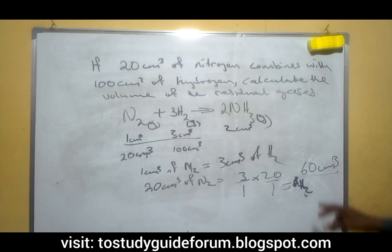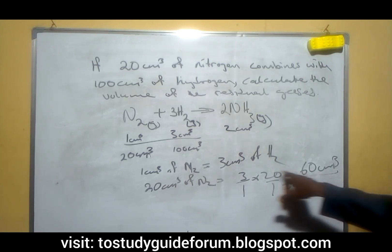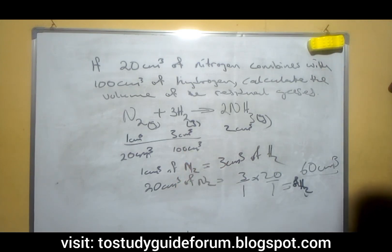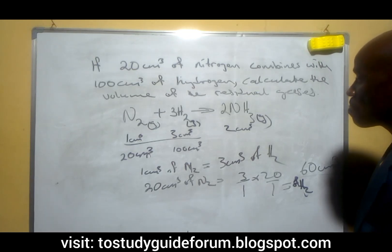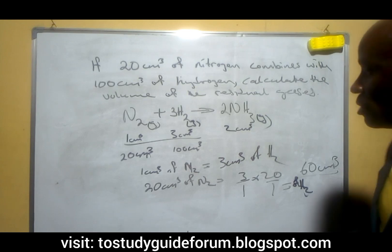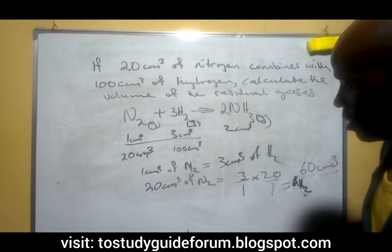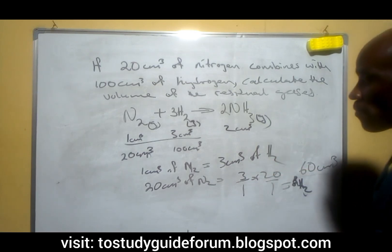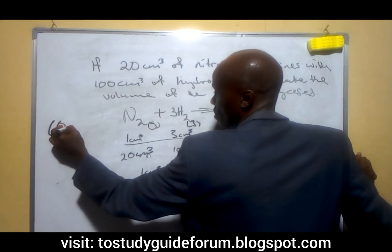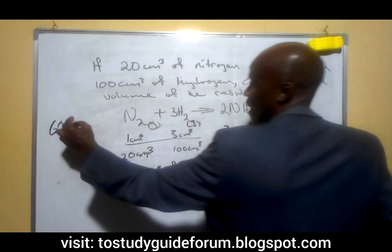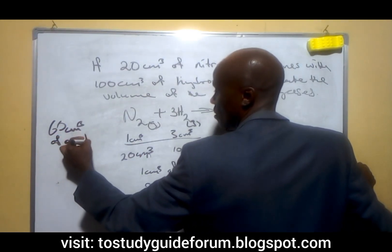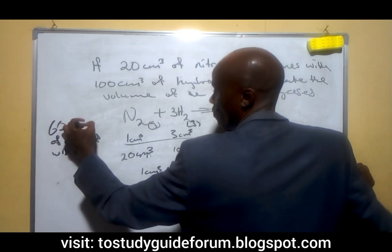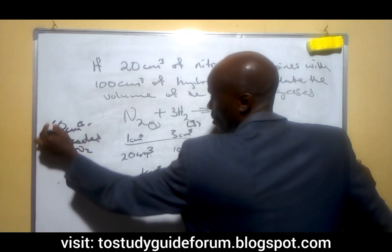So now we know what volume reacted. If 60 cm³ of hydrogen reacts, that means we have extra hydrogen, which will serve as one of the residual gases. At the end of the reaction, all 20 cm³ of nitrogen has gone into the reaction. We then have an extra 40 cm³ of hydrogen. The volume of hydrogen that reacted with the nitrogen is 60 cm³.